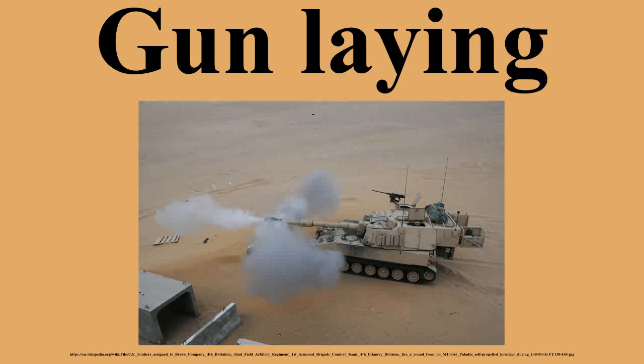All guns have carriages or mountings that support the barrel assembly. Early guns could only be traversed by moving their entire carriage or mounting, and this lasted with heavy artillery into World War II. Mountings could be fitted into traversing turrets on ships, coast defenses, and tanks. From circa 1900, field artillery carriages provided traverse without moving the wheels and trail. The carriage or mounting also enabled the barrel to be set at the required elevation angle. With some gun mounts it is possible to depress the gun, moving it in the vertical plane to point it below the horizon.